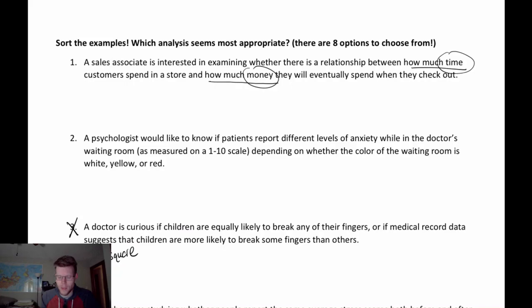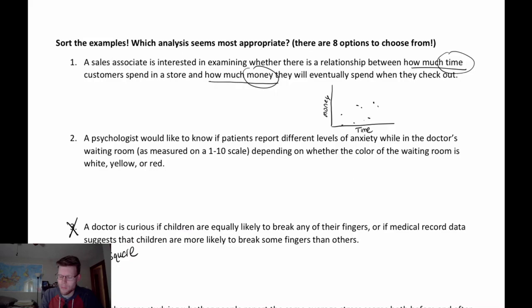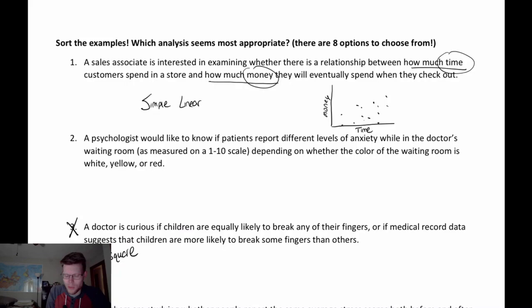If I'm trying to look at the relationship between two numeric variables, I can think about plotting time on the x-axis as a predictor of money. I can imagine observations showing how much time somebody spends and how much money they spend, and I might see some relationship between these two variables. This would be appropriate for simple linear regression — one predictor variable predicting one response variable, fitting a line to that relationship.